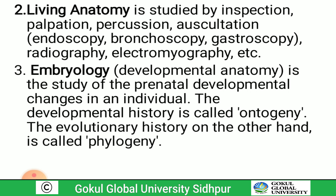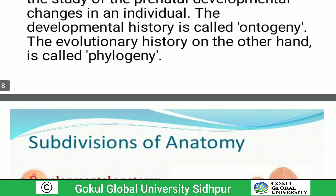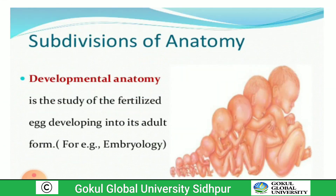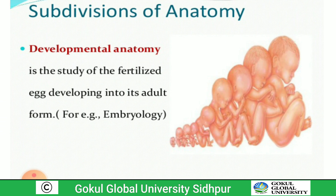Embryology or developmental anatomy is the study of prenatal developmental changes in an individual. The developmental history is called ontogeny — this is a new term for you. The evolutionary history, on the other hand, is called phylogeny, which is 'utkranthivata' in Sanskrit. Developmental anatomy studies a fertilized egg developing into its adult form.